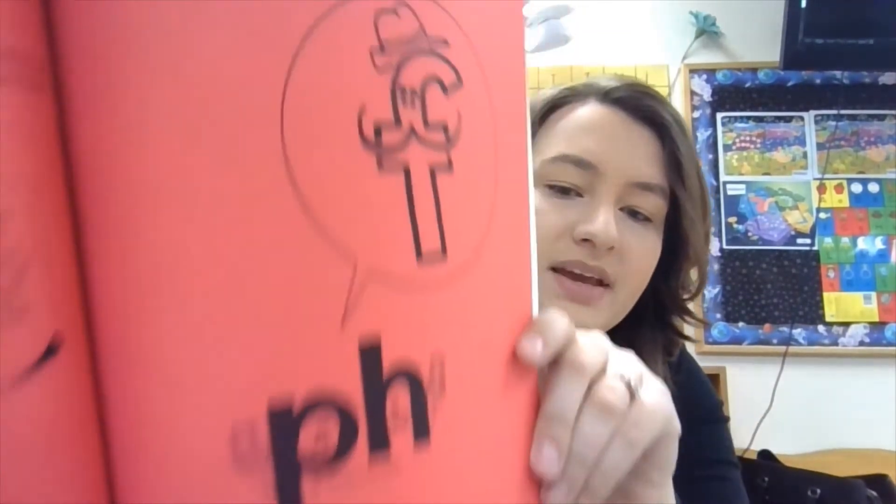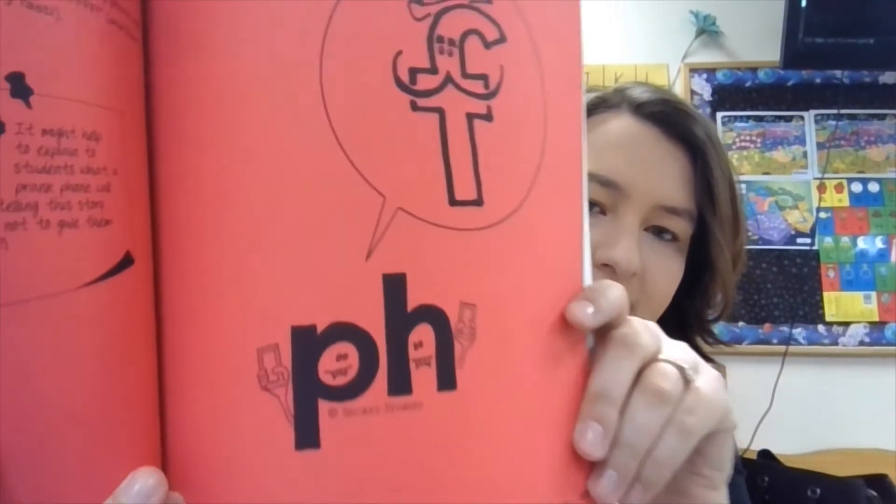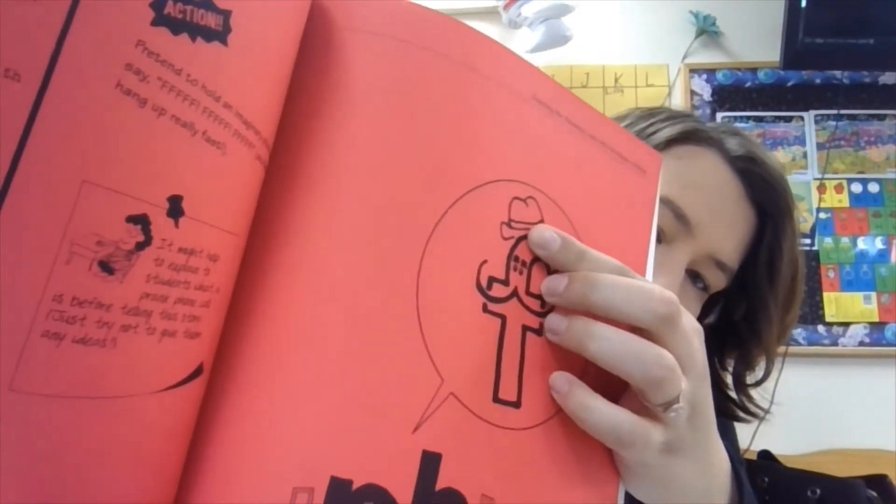Here we go. Phonics. The first one we're doing is PH. I'm going to show you a secret story. I'm going to show you the secret story for PH. So PH, they are pranksters. And P and H like to call people and pretend to be Mr. F. They'll call somebody and go, and they'll hang up really quick. And people think, oh, that was Mr. F. When really, it was sneaky PH. You see them? They're calling people. They're sneaky. They're pretending to be Mr. F. They have a mustache hat pretending to be him. So whenever PH and PH get together, they make the sound PH.